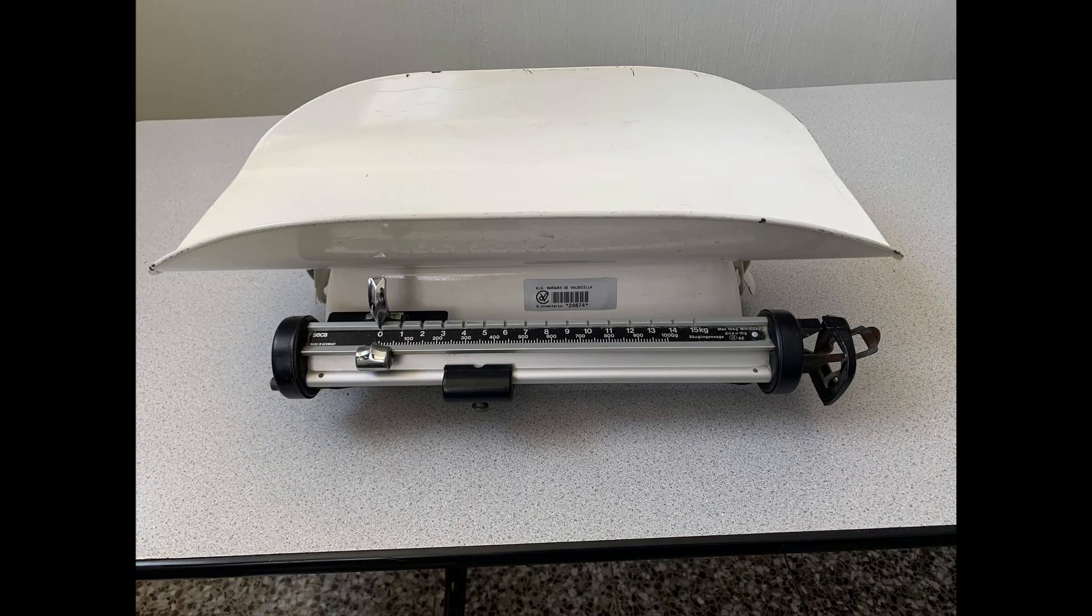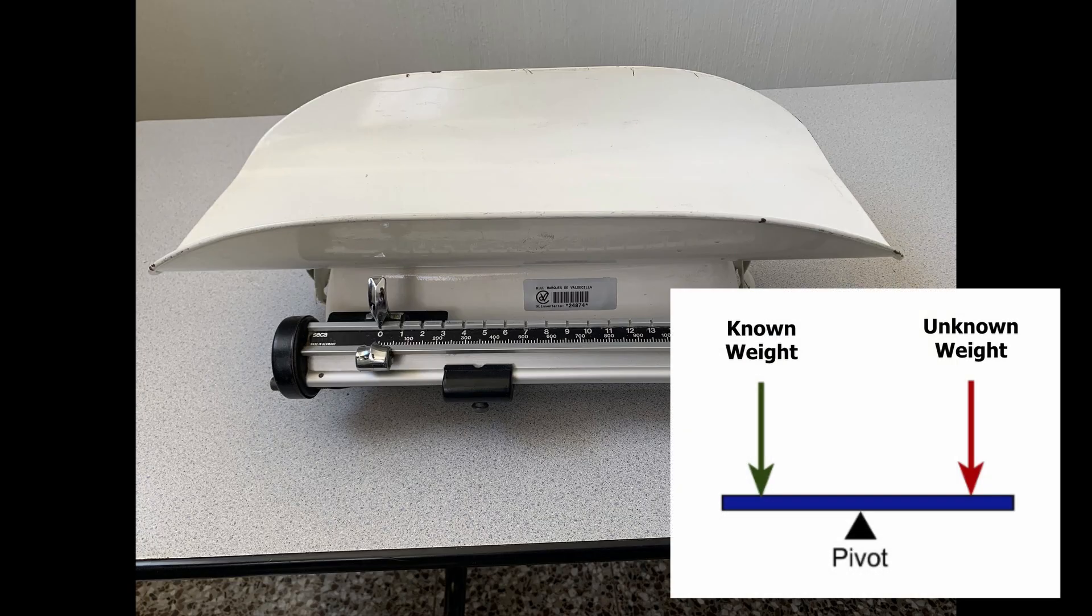All mechanical infant scales, scales that do not use electricity, work by comparing an unknown weight, such as an infant, to a known weight using a lever on top of a pivot. The weight of the unknown object is determined by the operator adjusting the location of sliding weights of a known weight in order to perfectly balance the lever. When the lever is balanced, the position of the sliding weight will indicate the baby's weight.